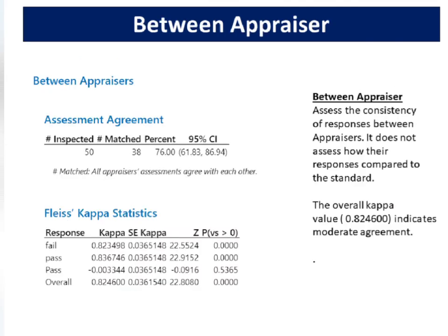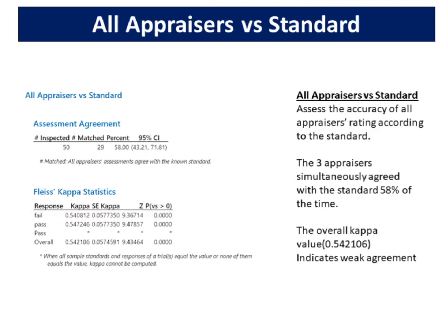Between appraiser assesses the consistency of responses between appraisers; it does not assess how their response compares to the standard. The overall kappa value of 0.8246 indicates moderate agreement. All appraisers versus standard assesses the accuracy of all appraisers' ratings according to the standard. The three appraisers simultaneously agreed with the standard 58% of the time. The overall kappa value of 0.542106 indicates weak agreement.